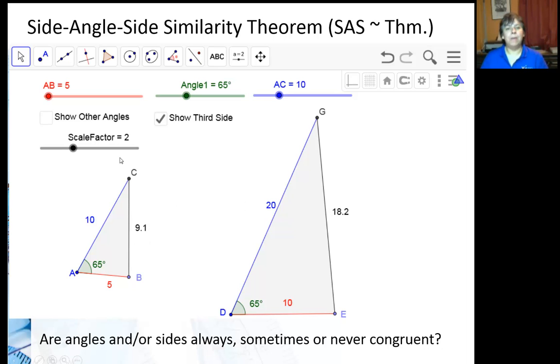In this case, the scale factor is two. You can see I've set it there, so 9.1 times 2 is 18.2. So all three sets of sides are proportional. Well, if all three sets of sides are proportional, it's similar.